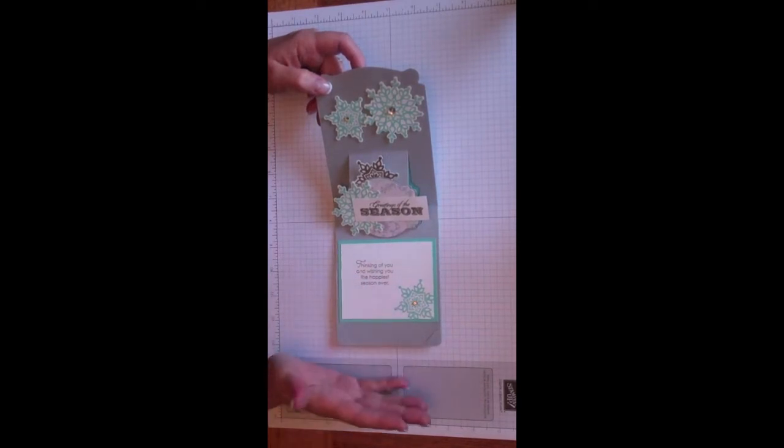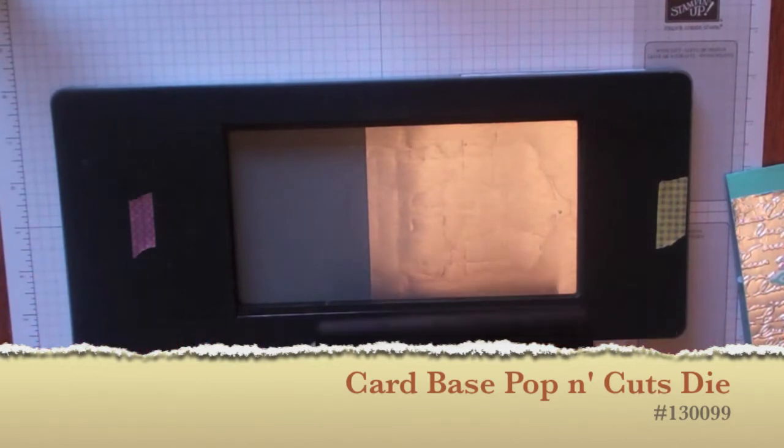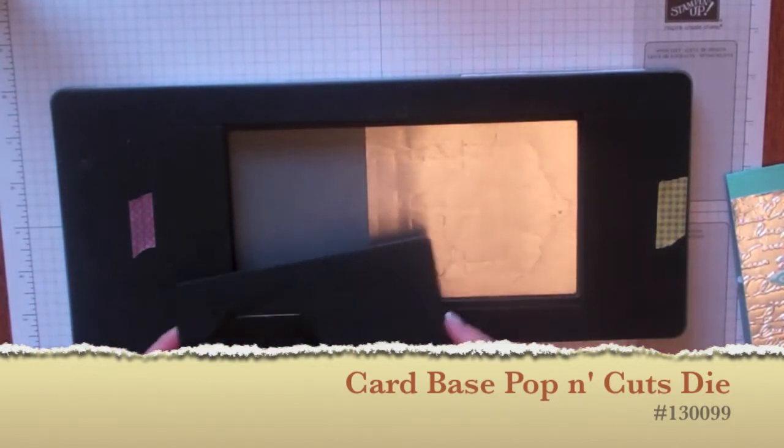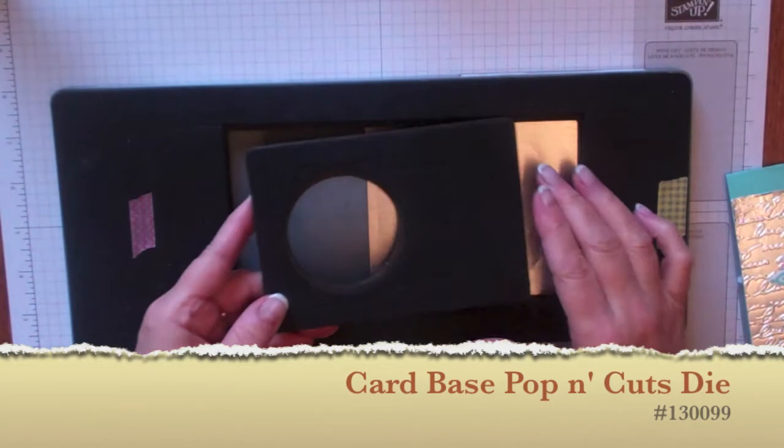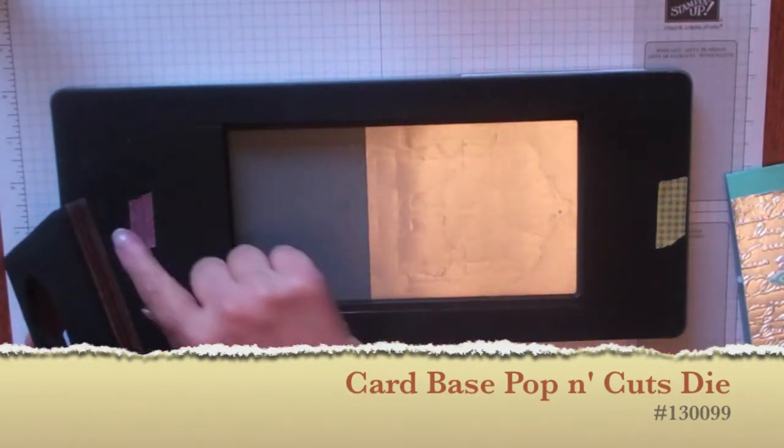Let me show you a couple of the components of this. The first thing I wanted to show you was the Pop and Cuts actual frame, and this is it. Then you've got things that you can pop in to make other elements. This one is a label. To start, I'm looking for the midpoint of the die, which is here.